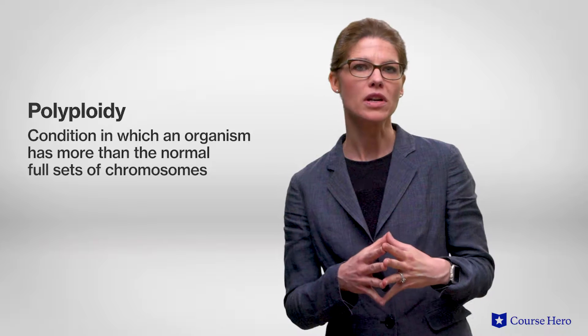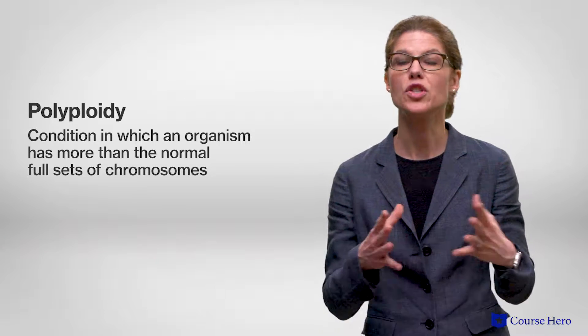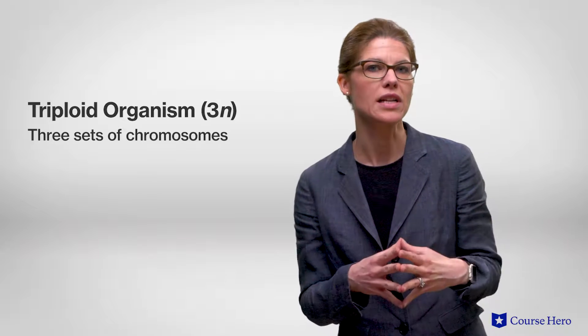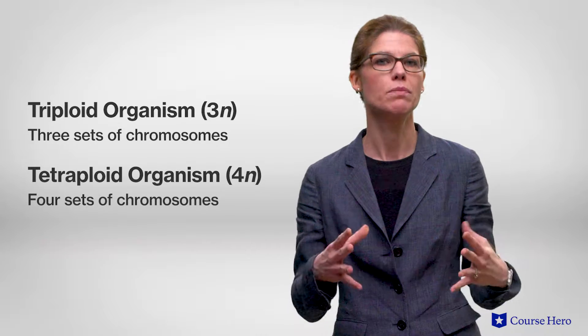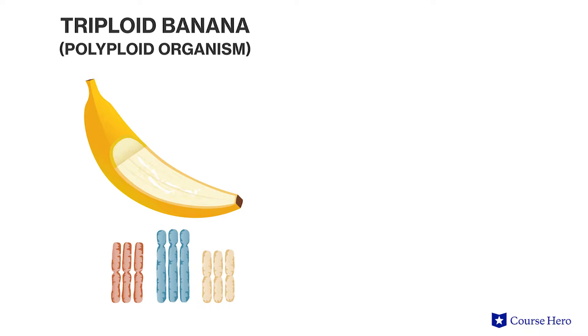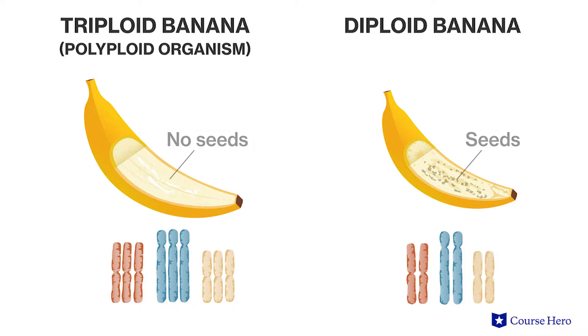We use the term polyploidy to describe an organism or cell that has more than two sets of chromosomes. It is possible for certain organisms to end up with three sets of chromosomes, known as triploid organisms, or even four sets, known as tetraploid organisms. Although polyploidy results in miscarriage in humans, it is common in plants. Organisms with these types of chromosome numbers tend to have larger cells. An example of a polyploid organism is a triploid banana — these fruits tend to be larger in size and lack seeds. Seedless watermelons are also an example of a triploid fruit.